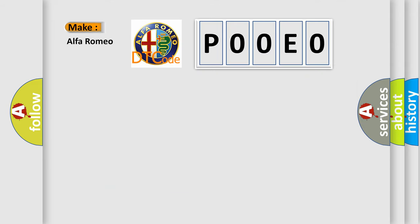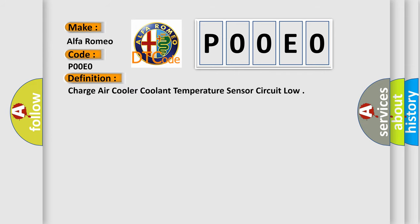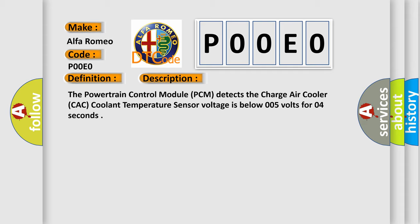So, what does the Diagnostic Trouble Code P00E0 interpret specifically for Alfa Romeo car manufacturers? The basic definition is: Charge Air Cooler Coolant Temperature Sensor Circuit Low.